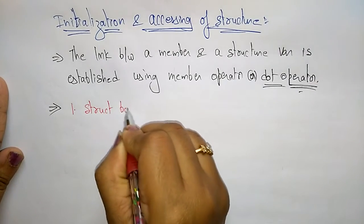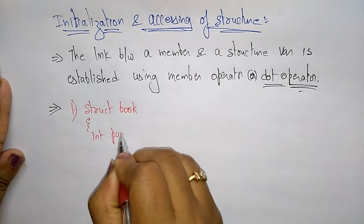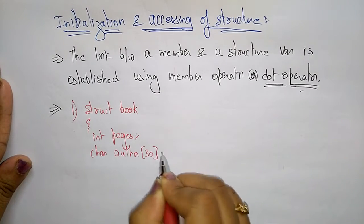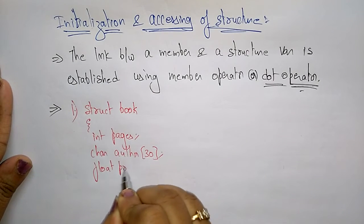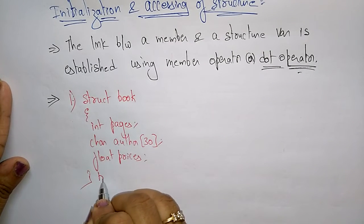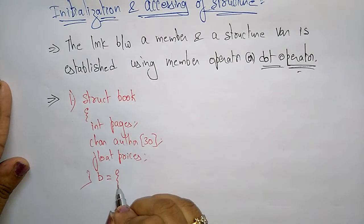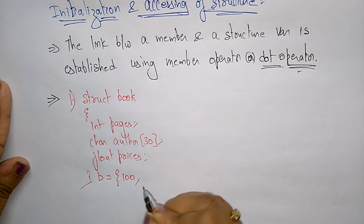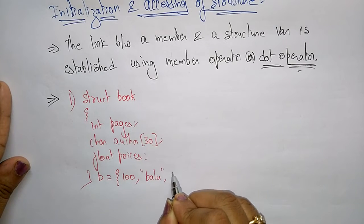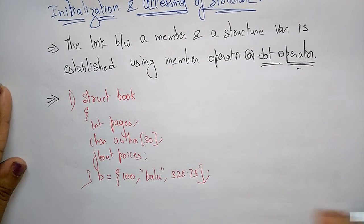struct book { int pages; char author[30]; float price; }. Here I'm initializing the structure, so B is the structure variable. B = {100, "Balu", 325.75}.